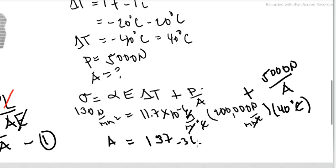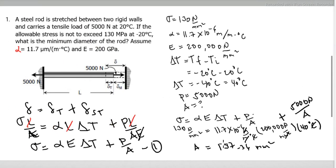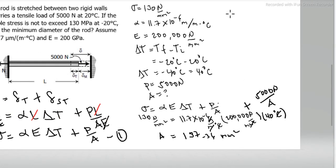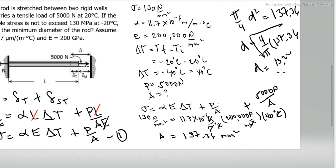But what we're looking for is diameter. So convert: π over 4 D squared equals 137.36 mm squared. So D equals square root of 4 over π times 137.36. So D equals 13.22 mm. That's our diameter.